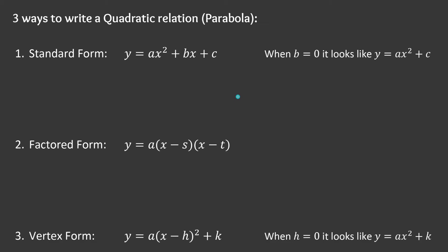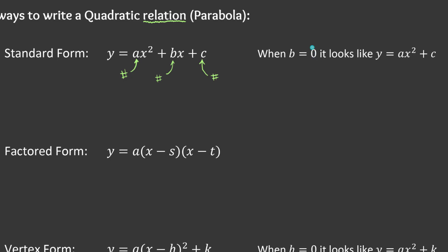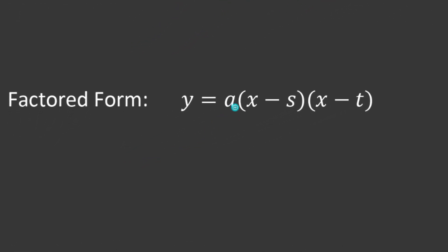Speaking of equations, let's talk about the three different standard forms you'll notice when dealing with quadratic relations — otherwise known as parabolas. Standard form looks like ax squared plus bx plus c, where a, b, and c are numbers. The c value could even be zero. When the b value is zero it looks like ax squared plus c, which resembles the equation of a line: mx plus b — just that x is squared.